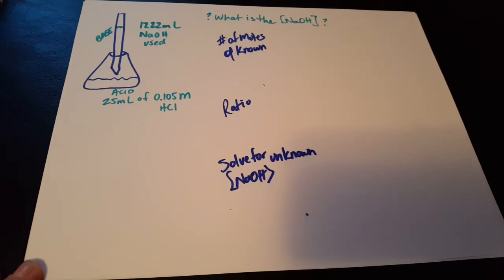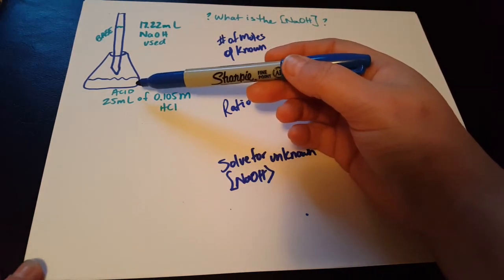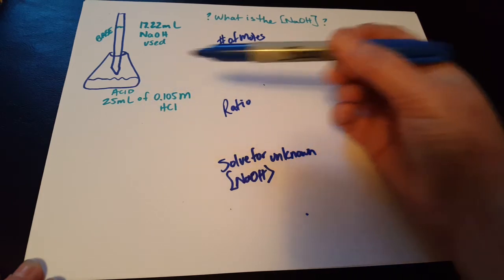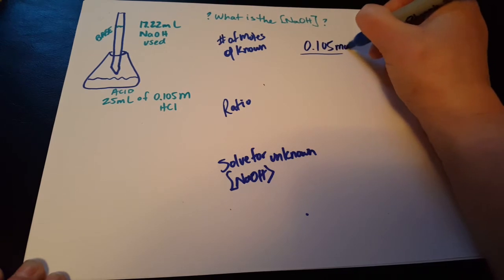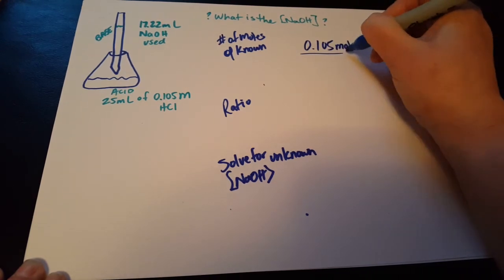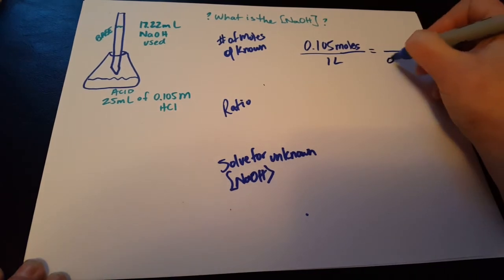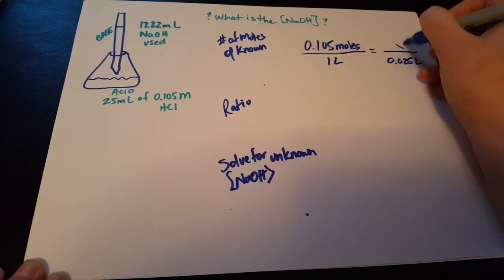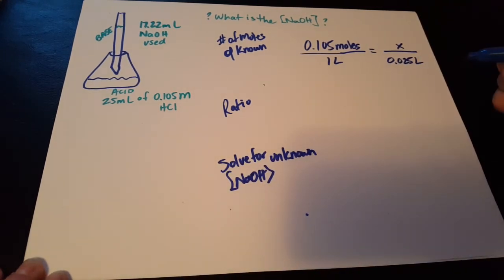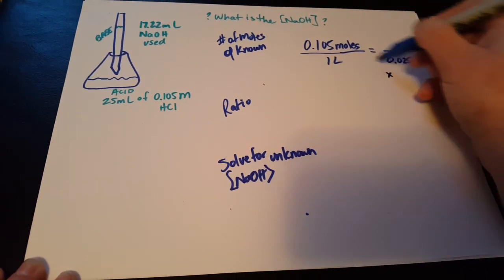Let's start with the number of moles of the known. The acid has been inside of the Erlenmeyer flask since the beginning of the experiment. We've got 0.105 moles of HCl in one liter of the solution, and we know that we have 25 milliliters of the solution. We're trying to determine the number of moles, and that will come out if we cross multiply.